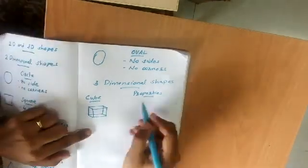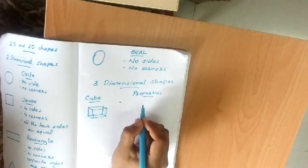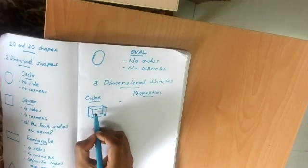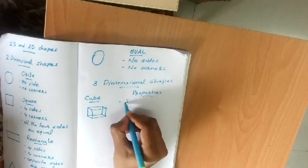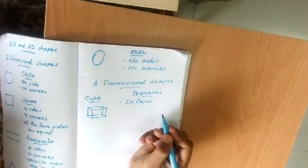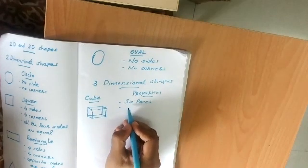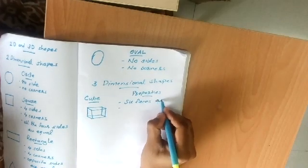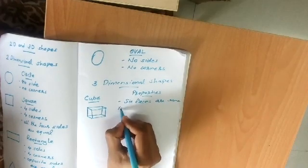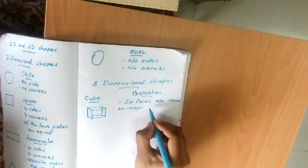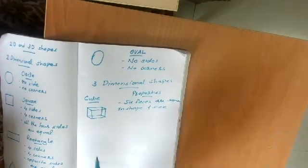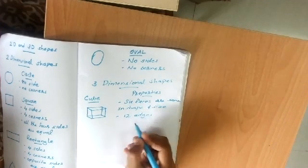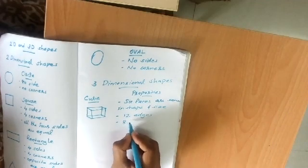Let's check the properties of a cube. In a cube there are six faces, and all six faces are the same in shape and size. A cube also has 12 edges and eight vertices.